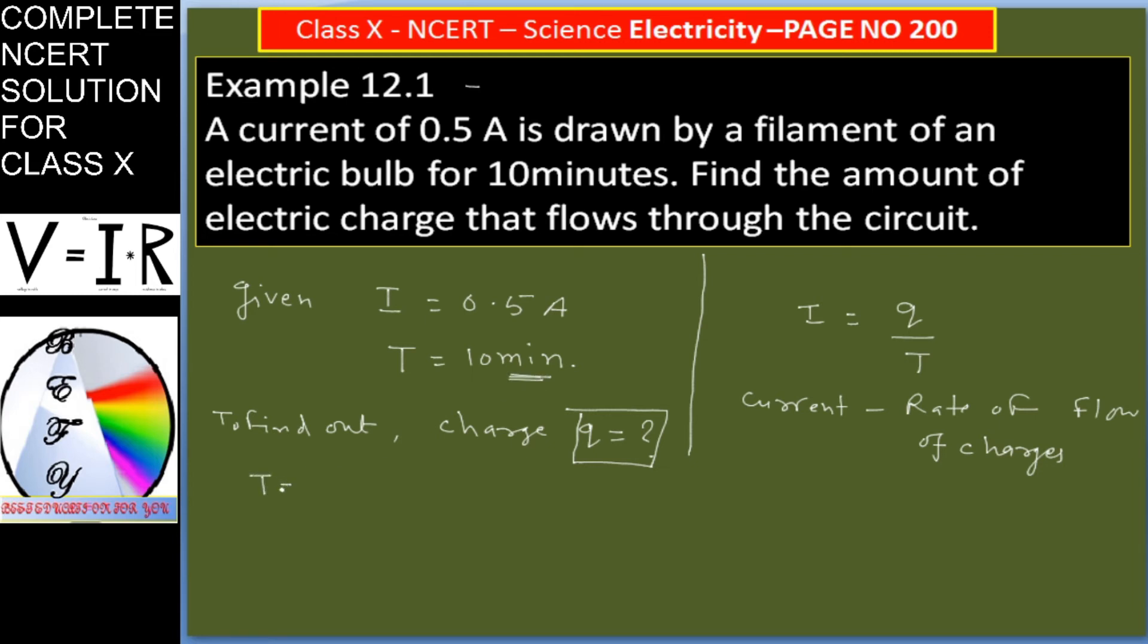So what we will do is convert minutes into seconds. SI unit of time is second. So 10 minutes: one minute is equal to 60 seconds, 10 minutes is 10 into 60, equals 600 seconds.